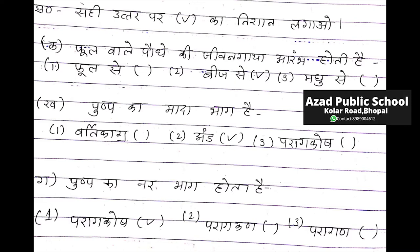Phool wale podho ki jeevan gatha kis se arambh hoti hai? Uttar: B. Pushpa ka madha bhaag kehlata hai aur pushpa ka nirbhaag kehlata hai. Paragkoosh pushpa mein dono bhaag hote hai — madha bhaag bhi hota hai, nirbhaag bhi hota hai. Nirbhaag ko kehete hai paragkoosh, aur madha bhaag ko kehete hai 'and'.